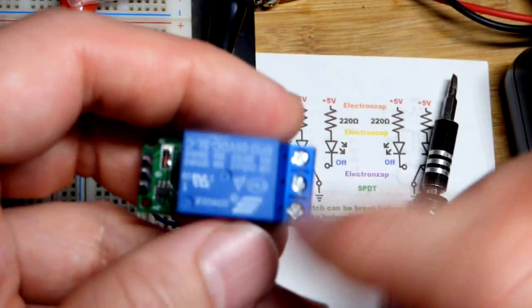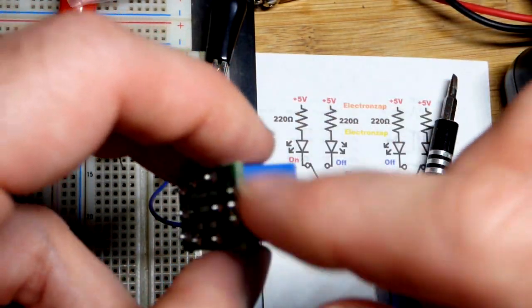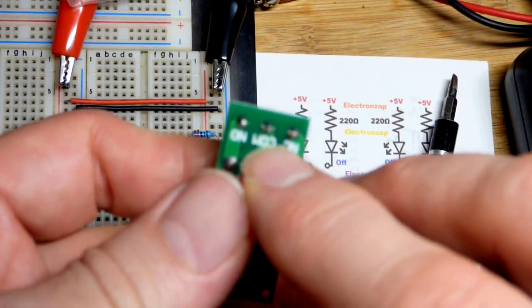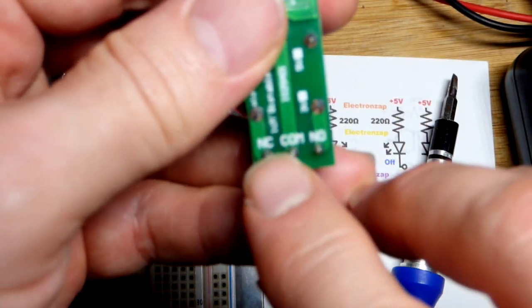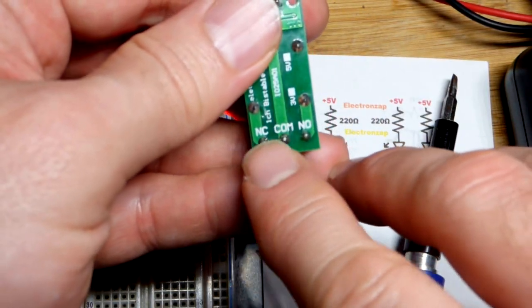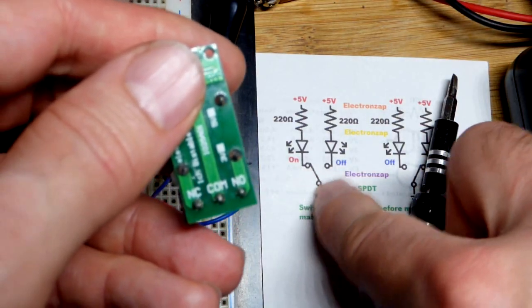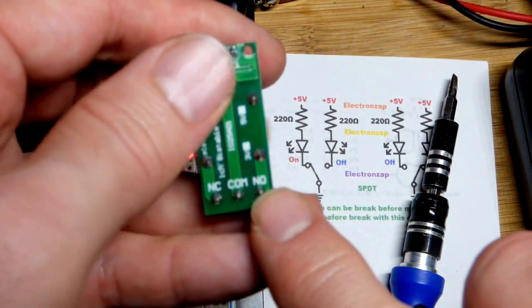This one though, if you don't have current going through the coil right now, nothing's being powered and so the connection is going to be between common and NC, normally closed. So closed means there's a connection. You can see there's an opening there. It's a gap. So that's open, but it's normally open.